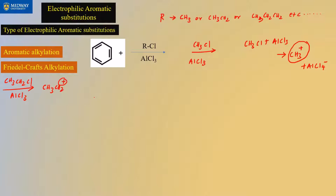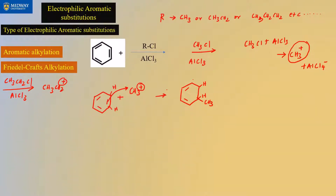I'm not going to show you the resonance structures — I want you to show those as part of your assignment. The electrophile reacts with the ring: whatever your R group is, that gets added to the ring. The double bond reacts with the carbon. So for CH3, you add CH3 anywhere on the ring. Keep in mind there was a hydrogen there to start with, and the positive charge is now on the ring.